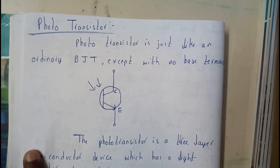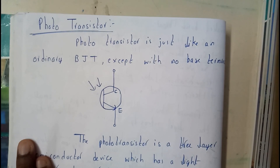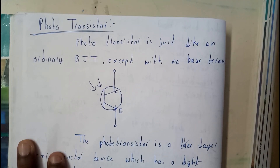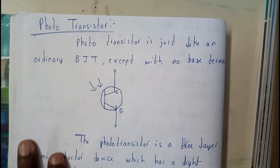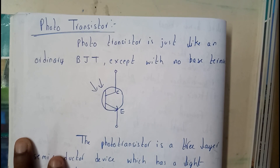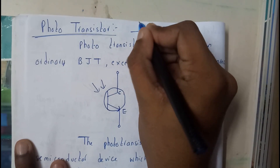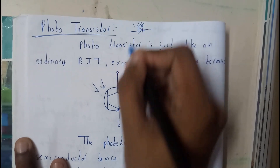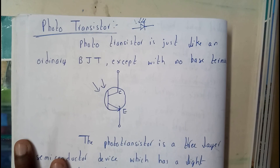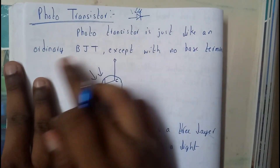Hello guys, we are back with our next tutorial. In this tutorial let's see all about photo transistors. We have just learned about photo diodes, so from the words photo diode or photo transistor, a diode is something like this. For that you give the intensity — that's nothing but light. So basically, a photo transistor is just like...